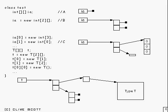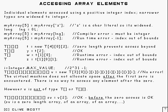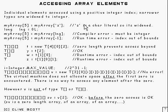Here we've got a picture showing what's happening at each stage — what gets generated — and there's an example there to make it a bit clearer. Hopefully these pictures will make it easier to understand what's happening. Next, we talked about accessing array elements.